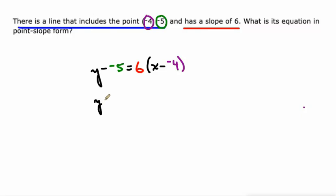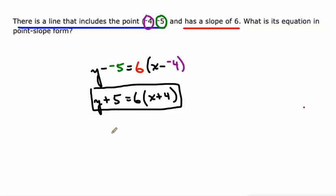Instead of minus negative 5, let's just make it plus 5. Instead of minus negative 4, let's just make it plus 4. That'll be our equation in point-slope form: y plus 5 equals 6 times x plus 4.